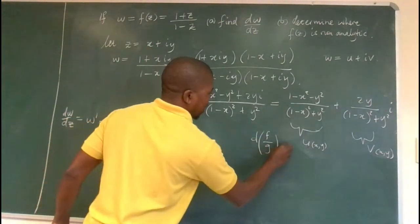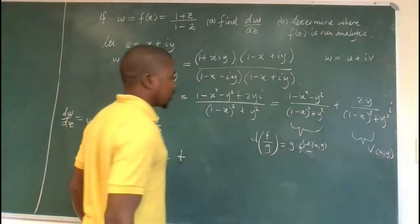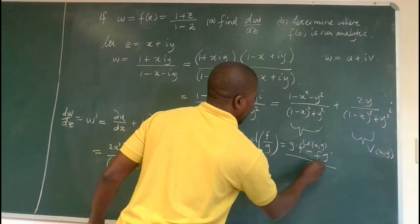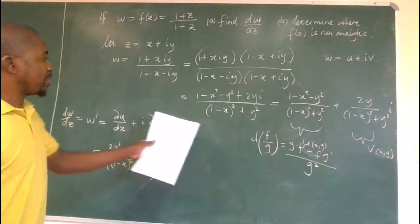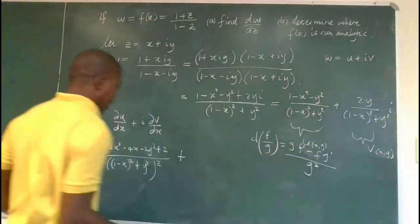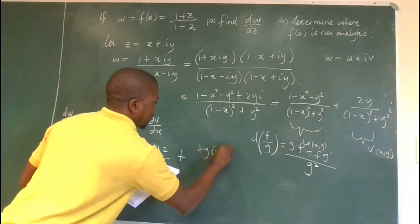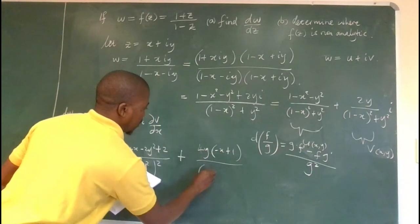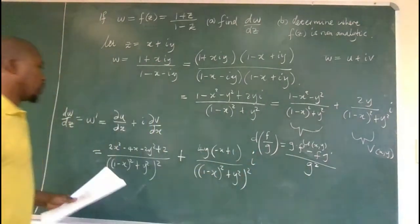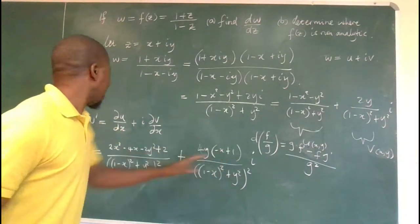Applying the same quotient rule to v with respect to x gives 4y(−x + 1) / [(1 − x)² + y²]². Combining the results, the derivative w′ = ∂u/∂x + i·∂v/∂x gives us the required answer. These are the partial derivatives of u and v with respect to x.